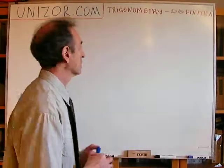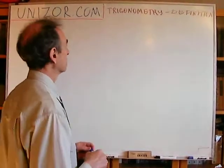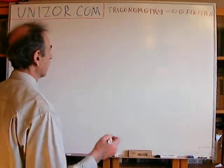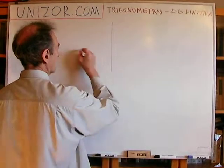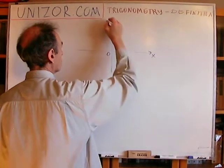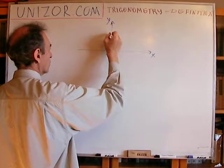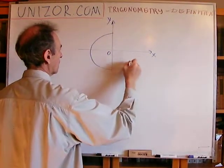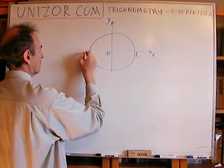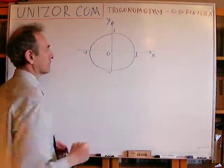Here is what I would like to present to you about this particular approach to defining trigonometric functions. Consider rectangular coordinates and a unit circle which has radius 1 and the center at the center of coordinates.